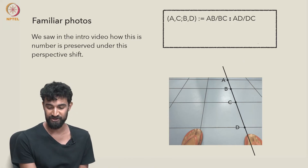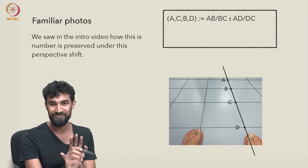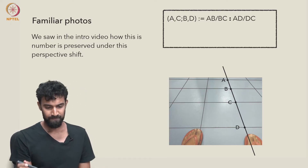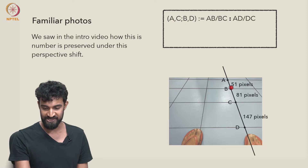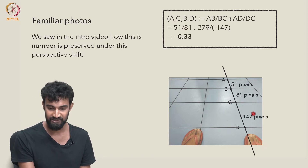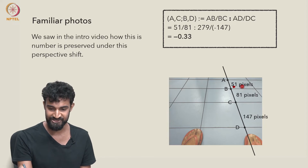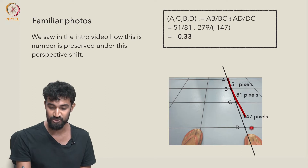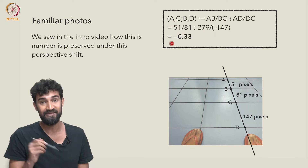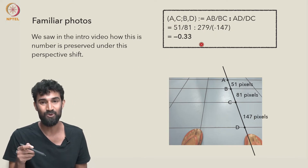We've seen how the cross-ratio is preserved under a perspective shift — we haven't proved it yet, but we'll take it as a fact for now. Indeed, if we measure out these pixels, AB is 51 pixels, BC is 81 pixels, the total AD is 279 pixels, and DC is negative 147 pixels. Put those in your calculator and you get negative 0.33 — so negative 1 third.